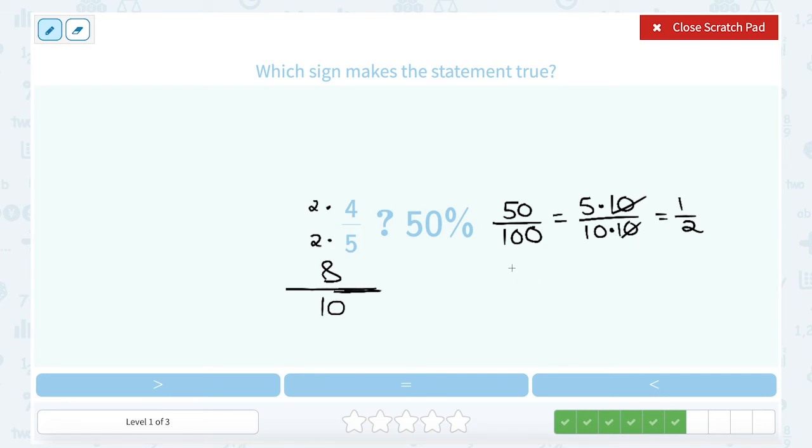We already saw that this was 5 out of 10 for our 1 half. So which is bigger, 8 out of 10 or 5 out of 10? Well, 8 out of 10 is bigger, so I would fill in my greater sign. 8 tenths is greater than 5 tenths. So that means 4 fifths was greater than 50%.